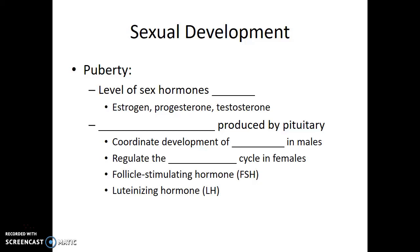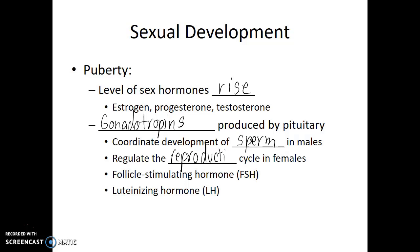Puberty is when an individual reaches sexual maturity. The levels of sex hormones — estrogen, progesterone, and testosterone — rise. This is caused by the production of gonadotropins by the anterior pituitary. This coordinates the development of sperm in males and regulates the reproductive cycle in females. These gonadotropins include follicle-stimulating hormone (FSH) and luteinizing hormone (LH).